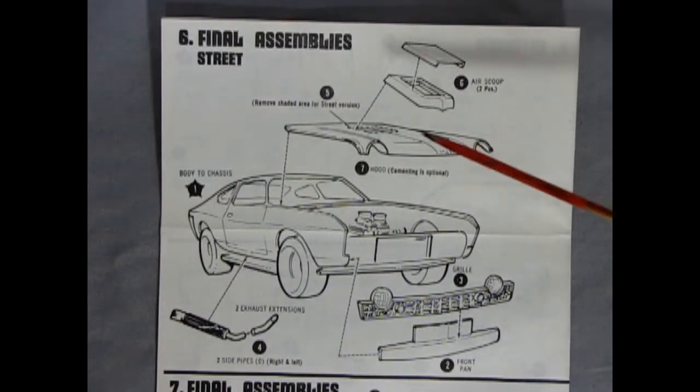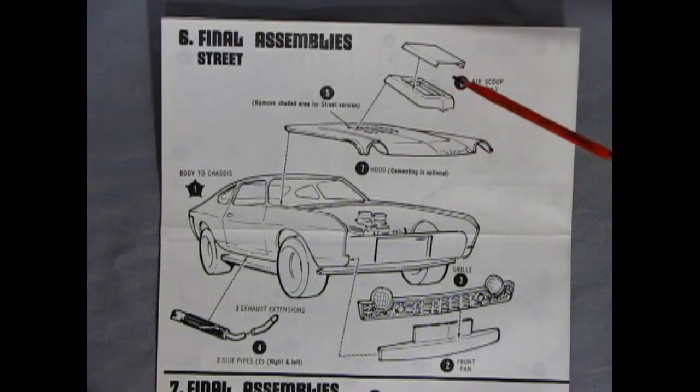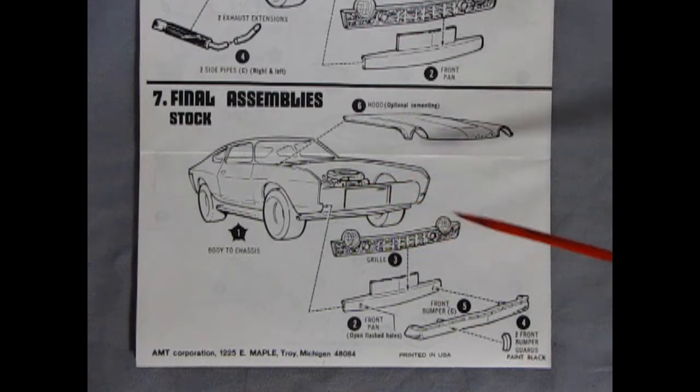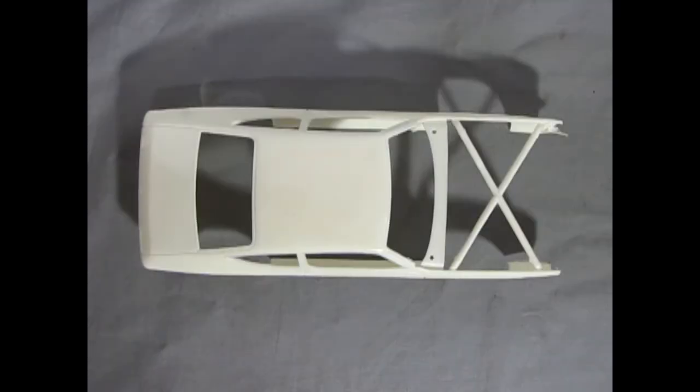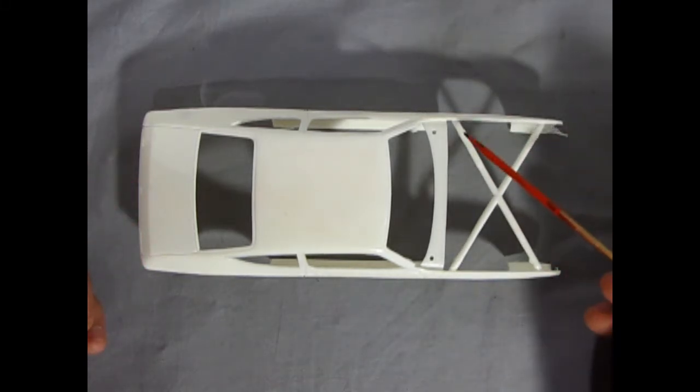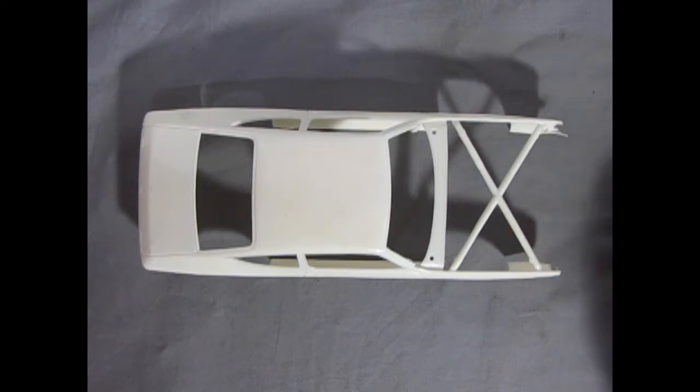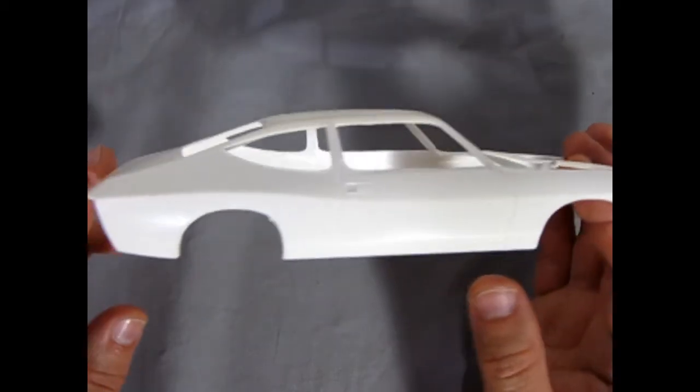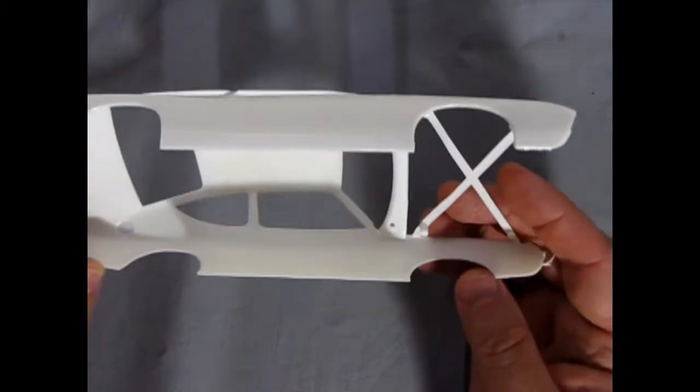Panel six shows the final assemblies for our street rod and it does say to cut out the hole in the bottom of the hood and then add in this really cool two-piece air scoop. Then we have our side exhausts and then our grille and a front pan will pop in underneath. Panel seven shows our final assemblies for the stock version. Here you have your hood going in place, your grille, your front pan and your bumper with the two bumper guards. And here we have our bright white Matador sport coupe. As you can see it is quite nice. There is a cross bracing in here on the fenders which needs to be removed. That was so that the fenders would be in nice alignment during the molding process.